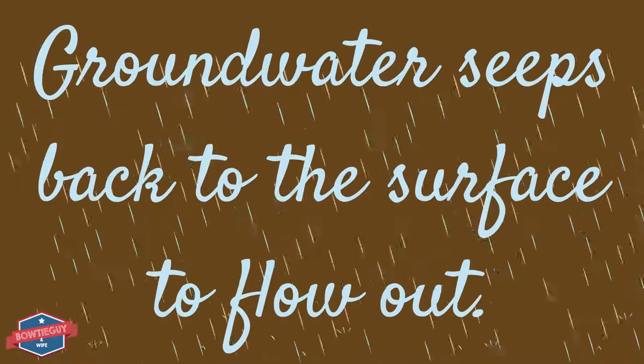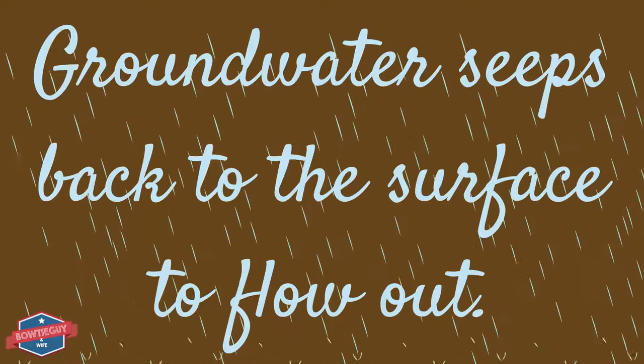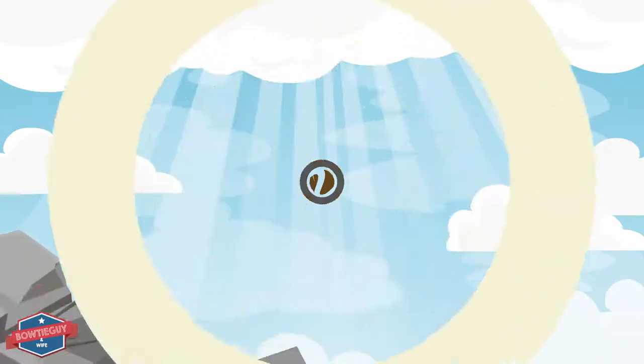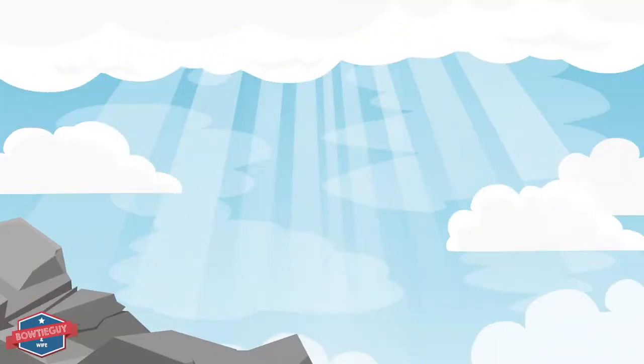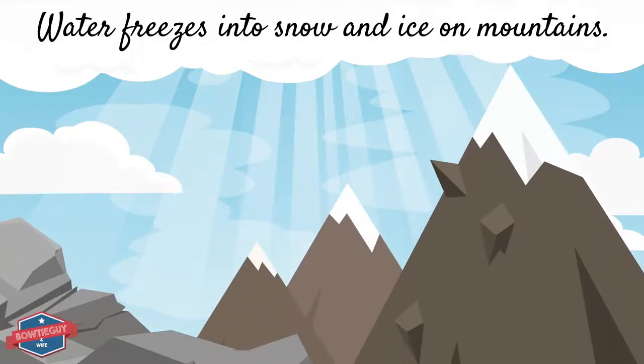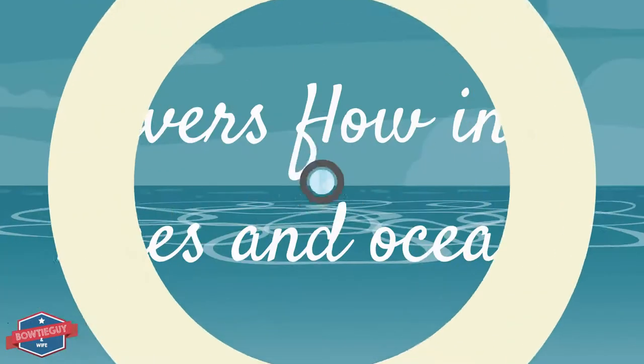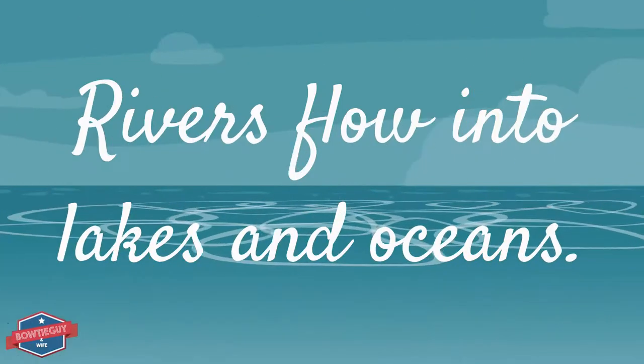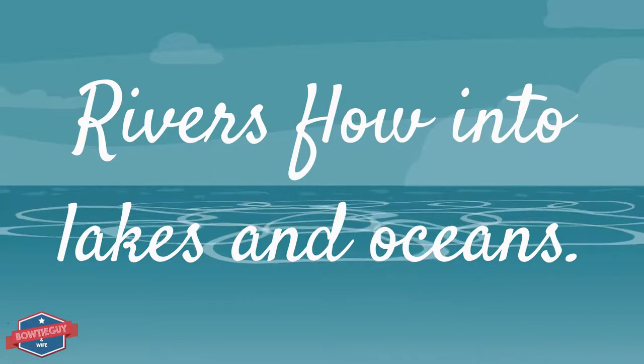Groundwater seeps back to the surface to flow out. Water freezes into snow and ice on mountains. Rivers flow into lakes and oceans.